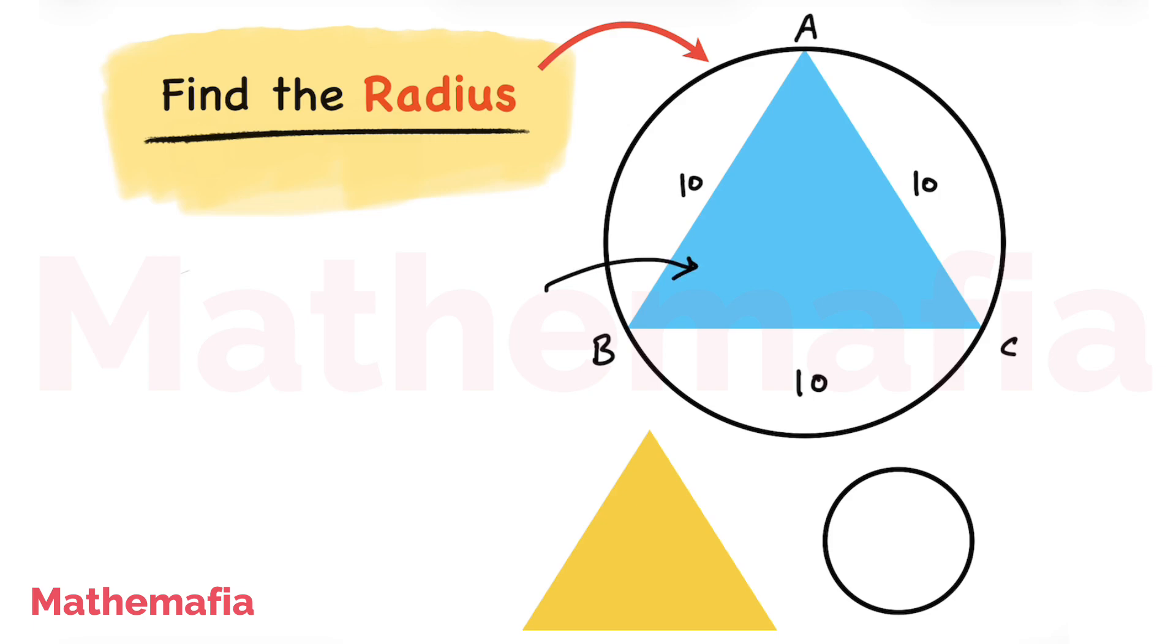ABC is an equilateral triangle and a circle passes through all its vertices. The length of each side of the triangle is 10. We are supposed to find the radius of the circle.